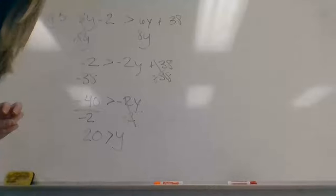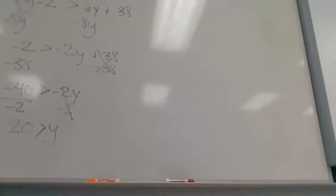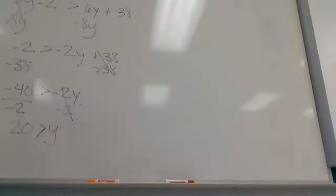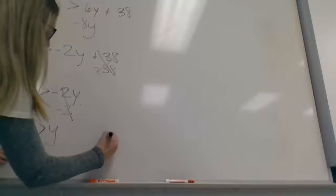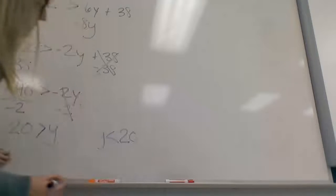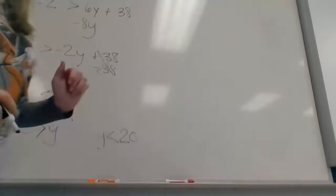If she's asking you to graph it or to put it on a number line, I would flip the equation around to make it make a little bit more sense. So in this case, I'm going to start with my y. And because I'm moving it, I need to flip my sign around. So this is saying y is less than 20.